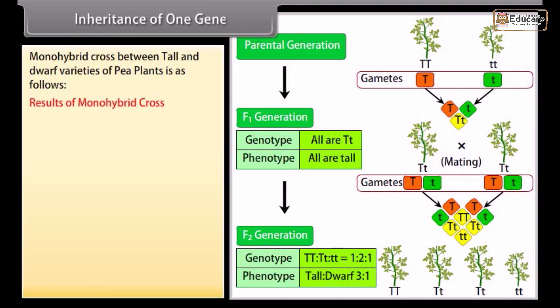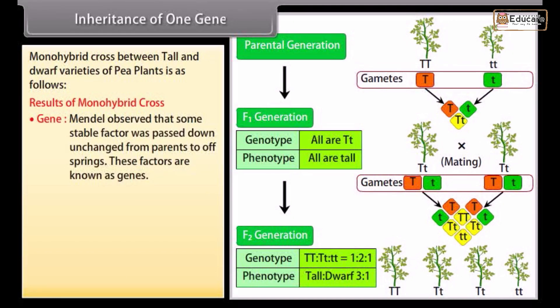Results of monohybrid cross. Gene: Mendel observed that some stable factor was passed down unchanged from parents to offspring. These factors are known as genes.